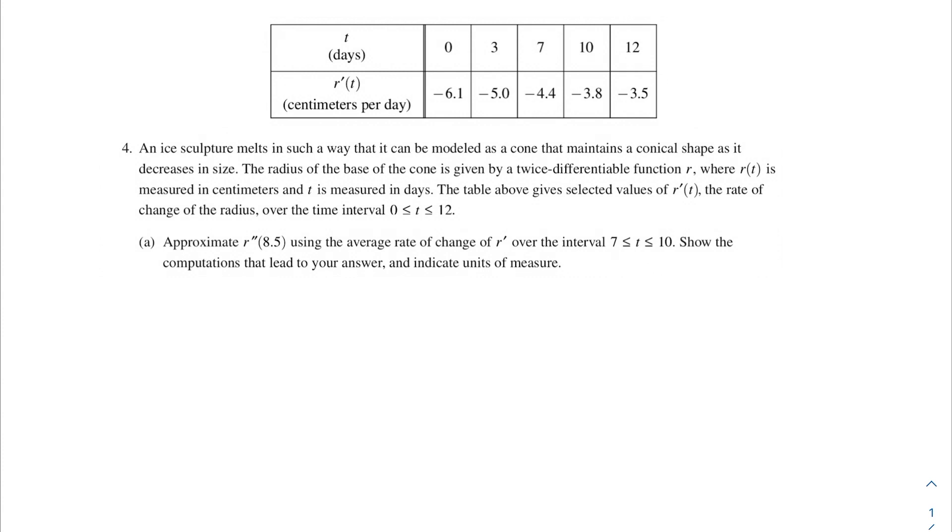Our first problem asks us to approximate r''(8.5) using the average rate of change of r' over the interval 7 < t < 10. Show the computations that lead to your answer and indicate units of measure. We are given r'(t) in this table, and we need to find the average rate of change of r'(t) from this interval. We can just use our average rate of change equation, which says that we can use r'(b) - r'(a) over b - a to approximate the average rate of change.